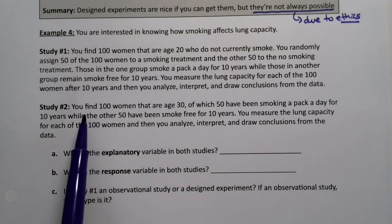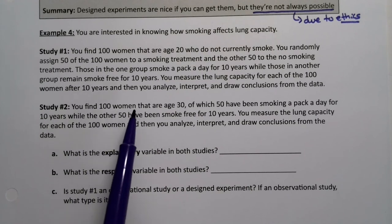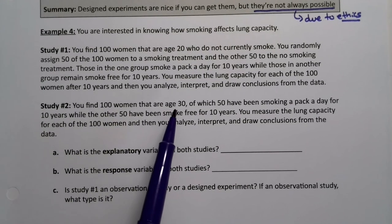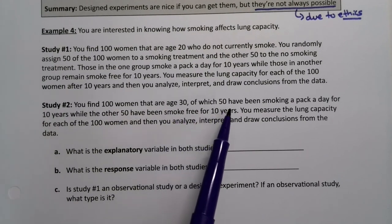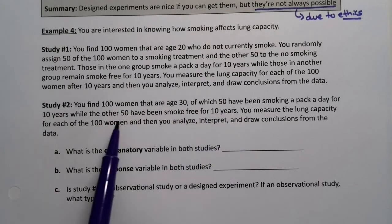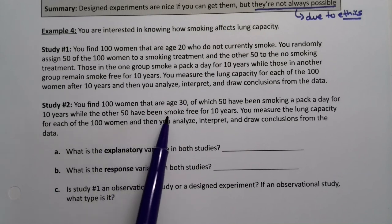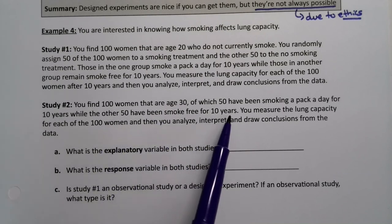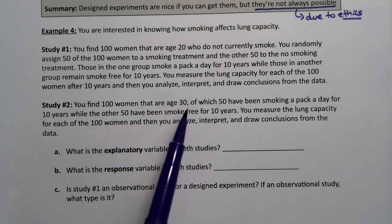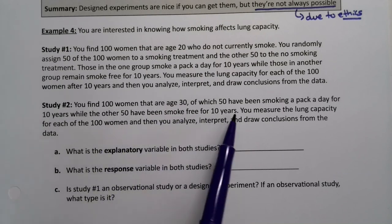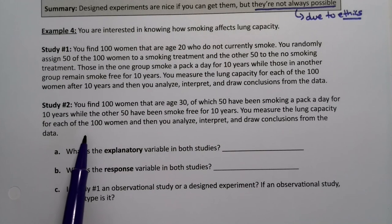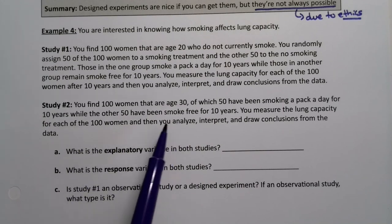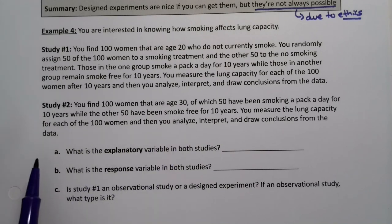In study number two, you find 100 women age 30, of which 50 have been smoking a pack a day for 10 years, while the other 50 have been smoke-free for 10 years. You measure lung capacity for each of the 100 women, and then analyze, interpret, and draw conclusions.